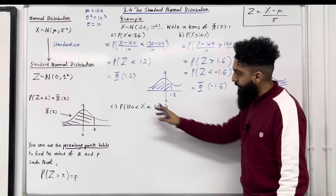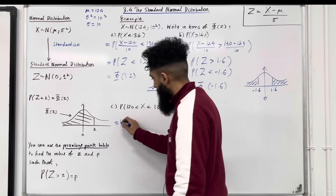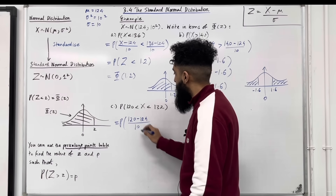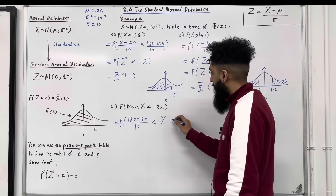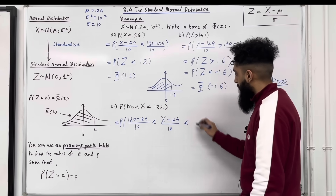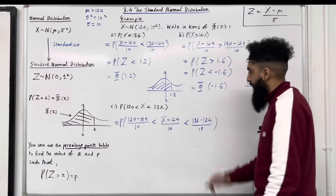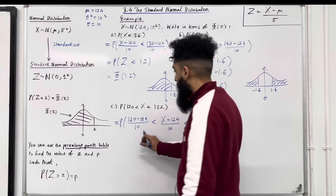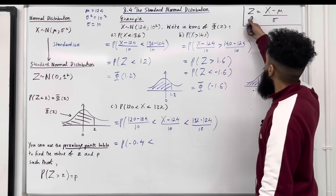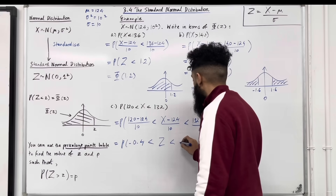Moving on to part C — now we've got a range. We start by standardizing: 120 minus 124 over 10, less than capital Z, less than 132 minus 124 over 10. The left fraction simplifies to minus 0.4, and the right fraction simplifies to 0.8. So we have probability minus 0.4 less than Z less than 0.8.